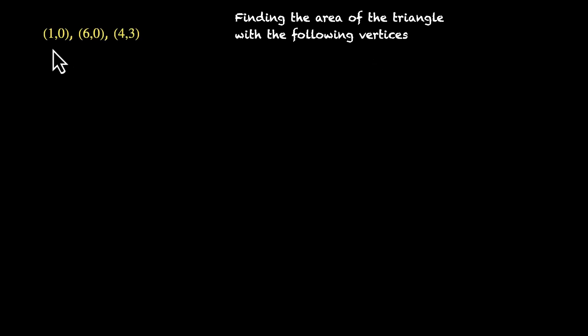Here is the question — we have to find the area of the triangle with the following vertices. This is the first set: we have these three points, (1, 0), (6, 0), and (4, 3).